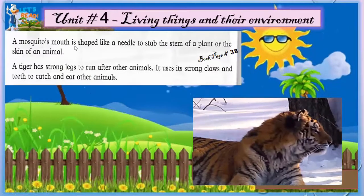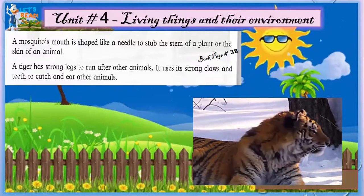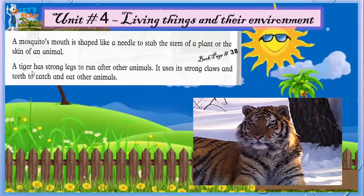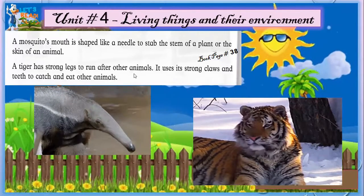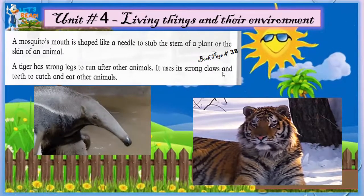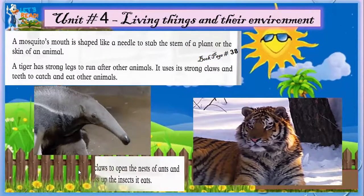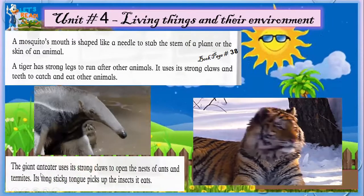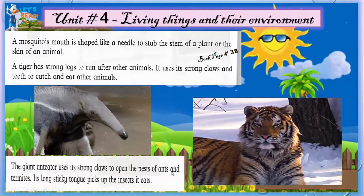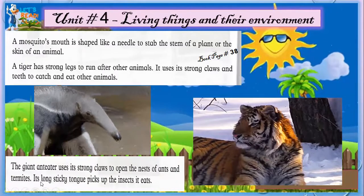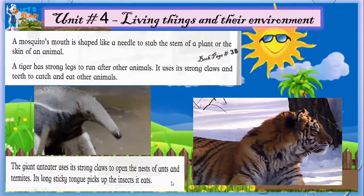A mosquito's mouth is shaped like a needle to stab the stem of a plant or the skin of an animal. A tiger has strong legs to run after other animals; it uses its strong claws and teeth to catch and eat other animals. The giant anteater uses its strong claws to open the nests of ants and termites, and its long sticky tongue picks up the insects it eats.